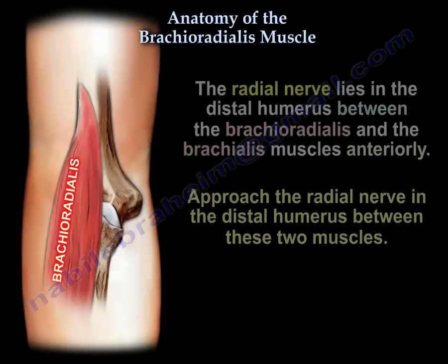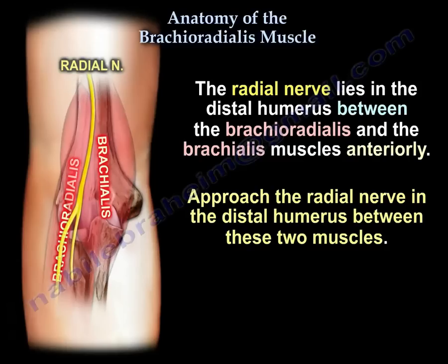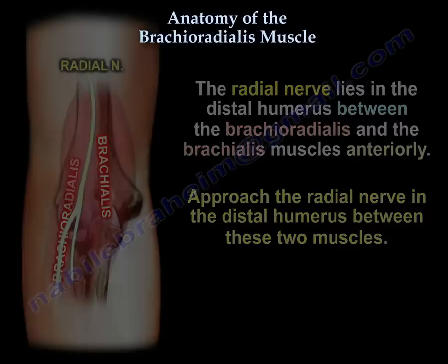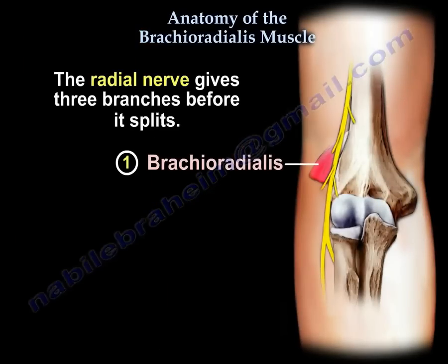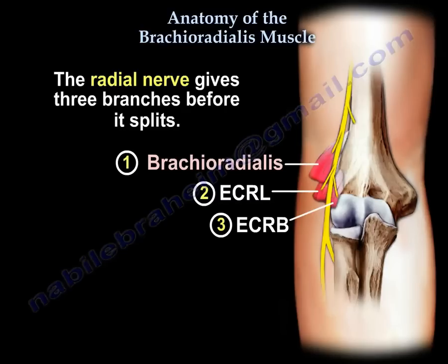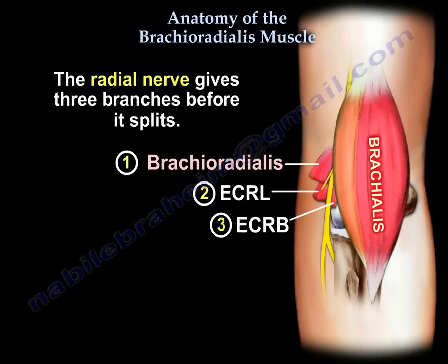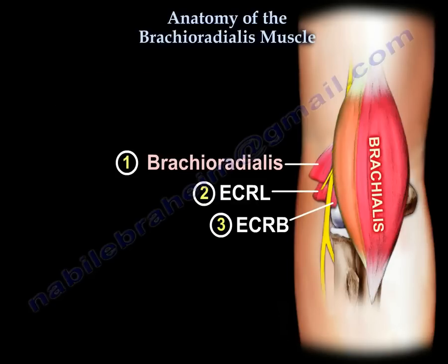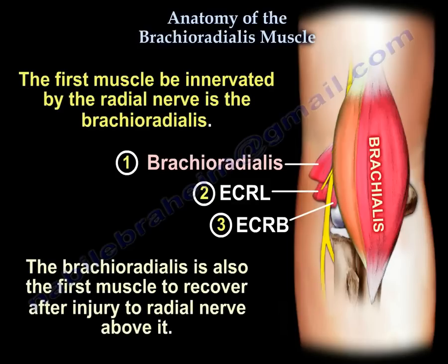Another important topic is the radial nerve. The radial nerve lies in the distal humerus anteriorly between the brachialis and brachioradialis. If you want to approach the radial nerve in the distal humerus, it will be between the brachialis and the brachioradialis anteriorly. The radial nerve gives three branches before it splits: first to the brachioradialis, followed by the extensor carpi radialis longus, followed by the brachialis.